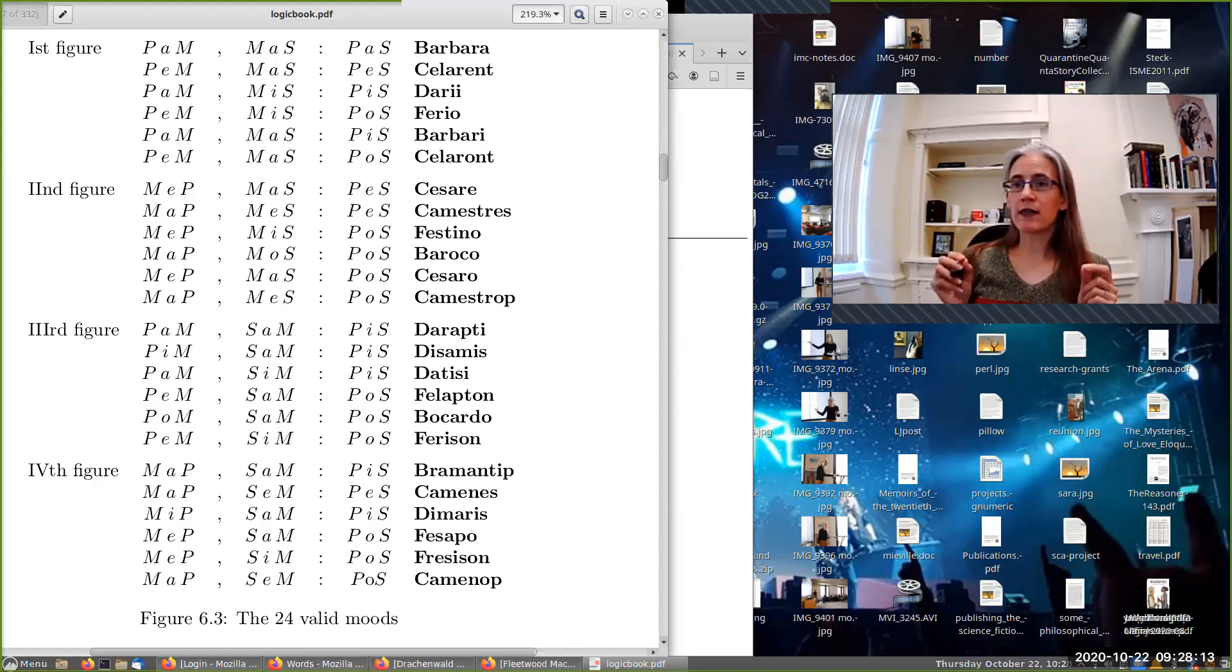Now, if you know any Latin, you will have heard prior, secundae, tertia, quarta - first, second, third, fourth. So part of what the mnemonic poem does is it helps you remember which syllogism is in which figure. First figure, second figure, third figure, or fourth figure.